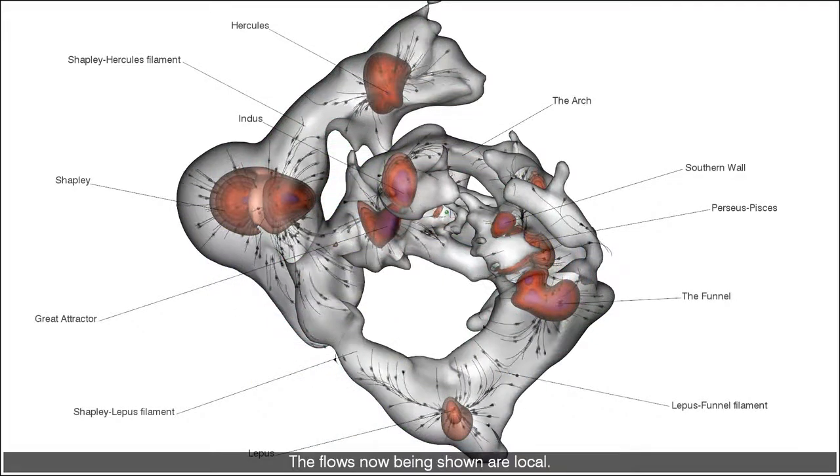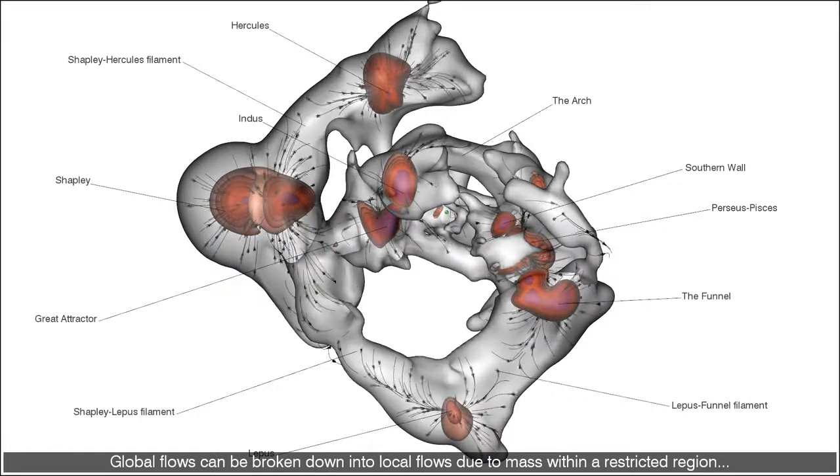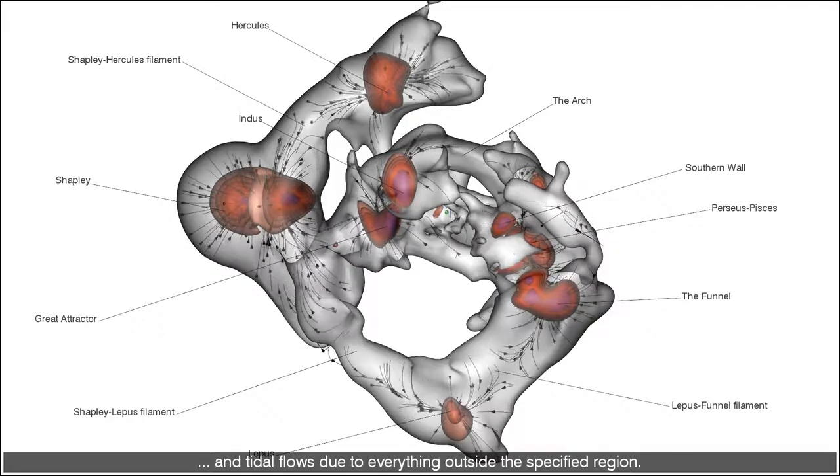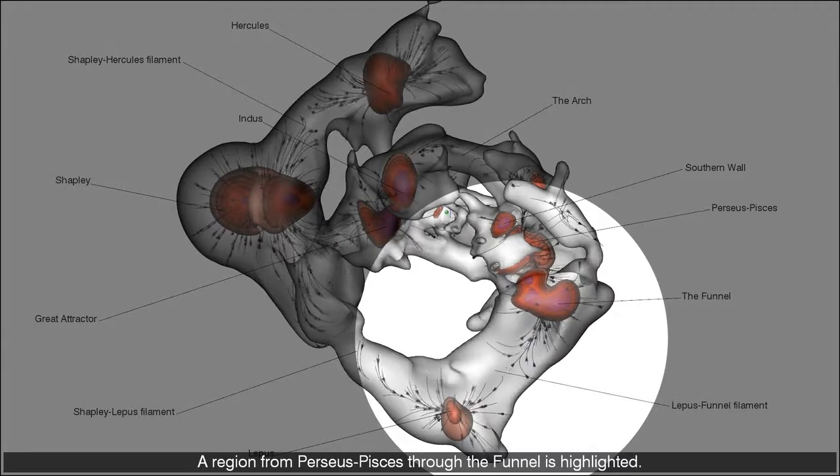The flows now being shown are local. Global flows can be broken down into local flows due to mass within a restricted region and tidal flows due to everything outside the specified region. A region from Perseus Pisces through the funnel is highlighted.